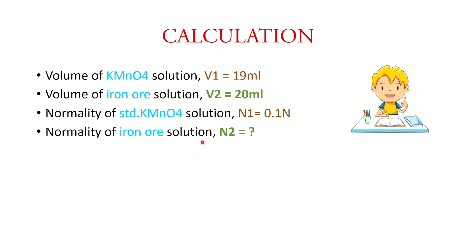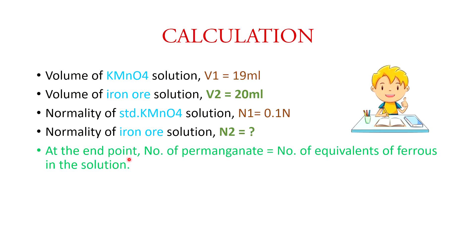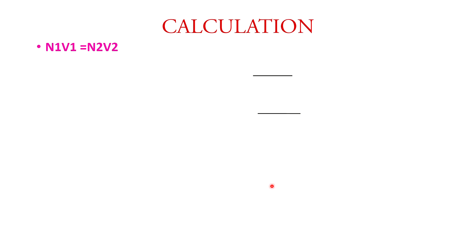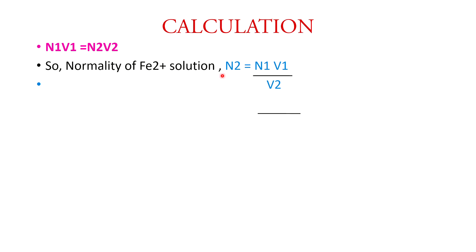The normality of the iron ore solution is N2. At the end point, the number of equivalents of permanganate equals the number of equivalents of ferrous ions. Using the equation N1V1 = N2V2, we rearrange to get N2 = N1V1 / V2. With N1 = 0.1, V1 = 19, and V2 = 20, we calculate N2 = 0.095 Normal.